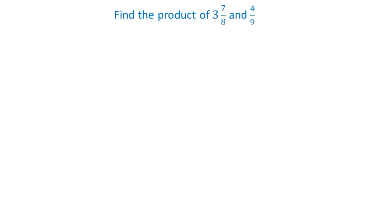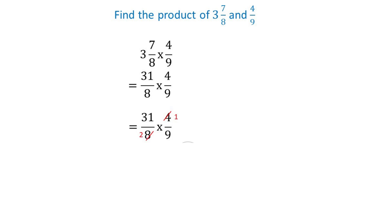Next example: find the product of three and seven over eight and four over nine. Write the mathematical sentence: three and seven over eight multiply four over nine. Convert the mixed number to an improper fraction — we will have 31 over eight — then multiply by four over nine. Do cancellation.